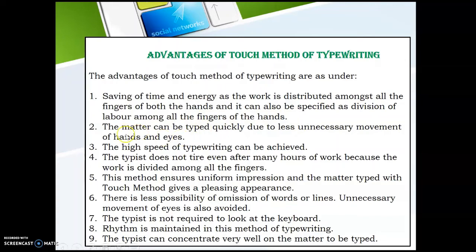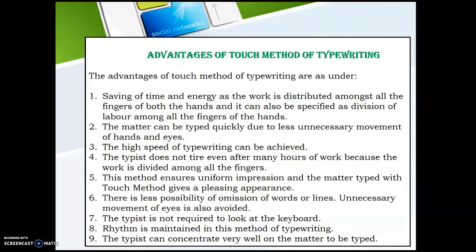Time and energy are saved. The matter can be typed quickly due to less unnecessary movement of hands and eyes, achieving high speed of typewriting. The typist does not tire even after many hours of work because work is divided among all fingers. This method ensures uniform impression, as matter typed with the touch method gives a pleasing appearance. There is less possibility of omission of words or lines, and the typist is not required to look at the keyboard, so rhythm is maintained.